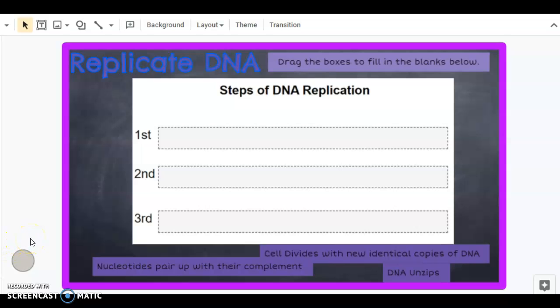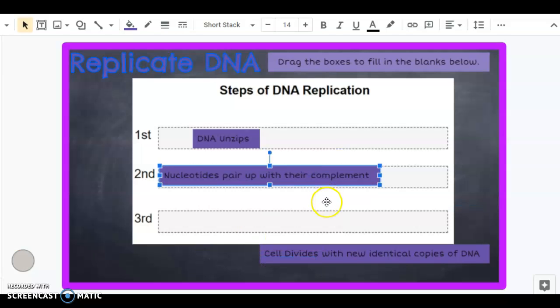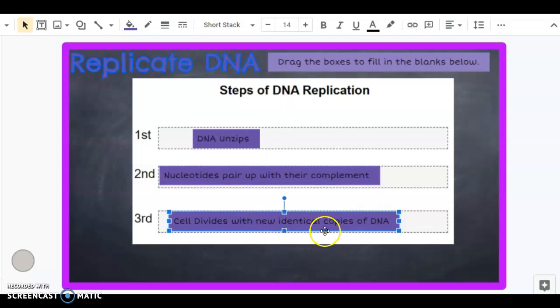Let's see if you remember the steps of DNA replication. Drag these in order and then check your answers here by unpausing the video. All right, let's see how you did. First, the DNA unzips by breaking those hydrogen bonds. Then the nucleotides get paired up with their complement to build the new half. And that allows the cell to divide and give an identical copy to each of the new cells. I hope this was helpful. I'll see you next time. Until then, have a great day.